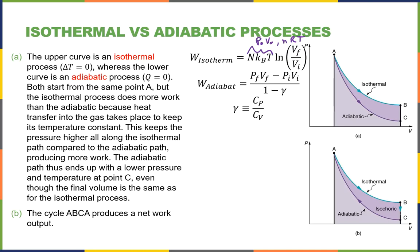For a monatomic ideal gas, γ = 5/3. If the gas is not monatomic, you would need Cp and Cv to be given. These equations let you calculate work done during isothermal and adiabatic processes. An adiabatic process is one in which there is no heat flow — from the Greek meaning 'cannot pass.' The heat cannot pass through the boundary.